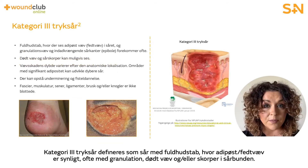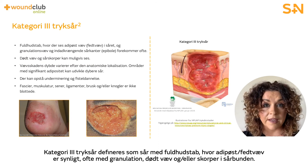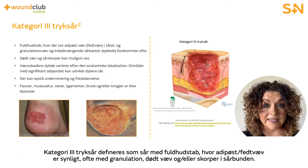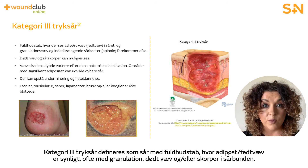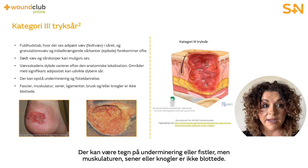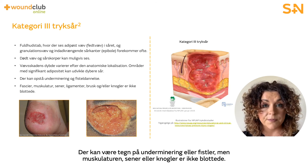Category three pressure ulcers are defined as those with full thickness loss of skin. Adipose or fatty tissue is visible, often with the presence of granulation, slough and/or eschar in the wound bed. There may be the presence of undermining or tunnelling. However, muscle, tendon, or bone is not exposed.